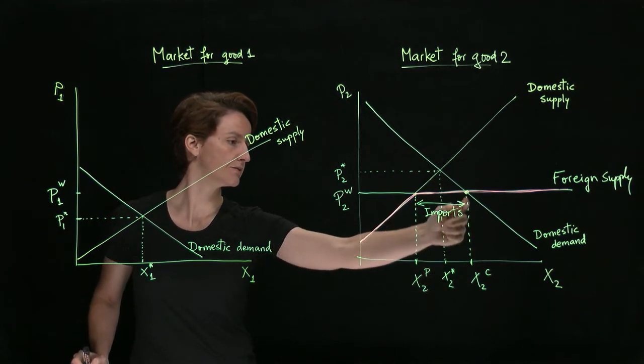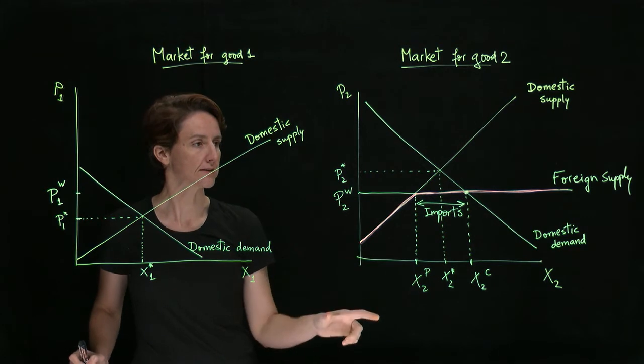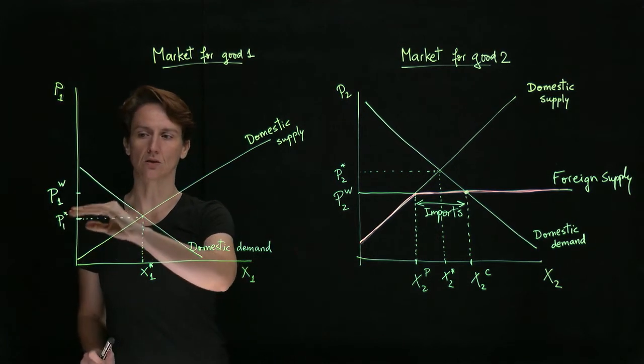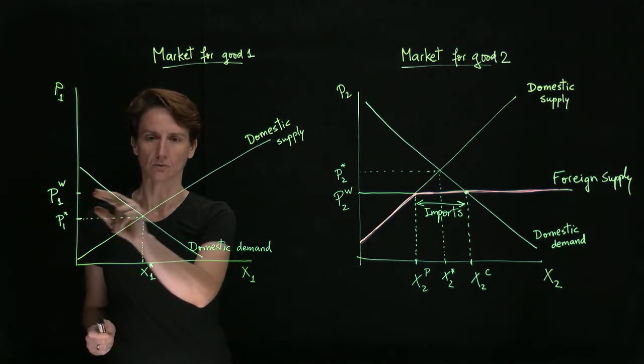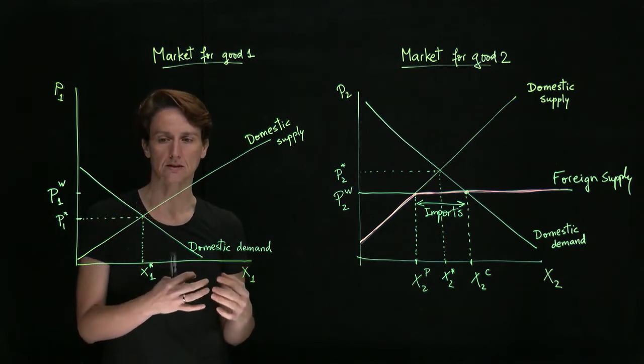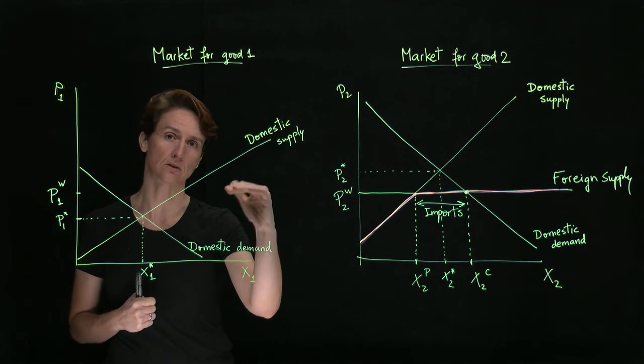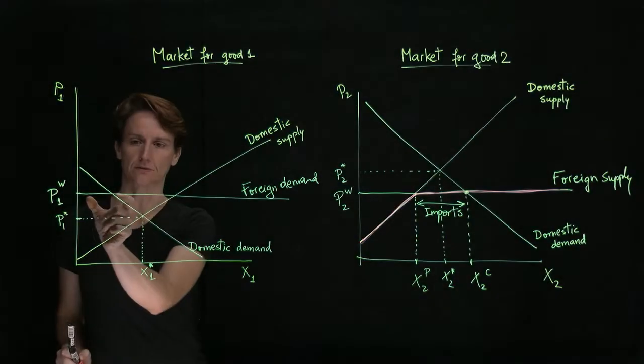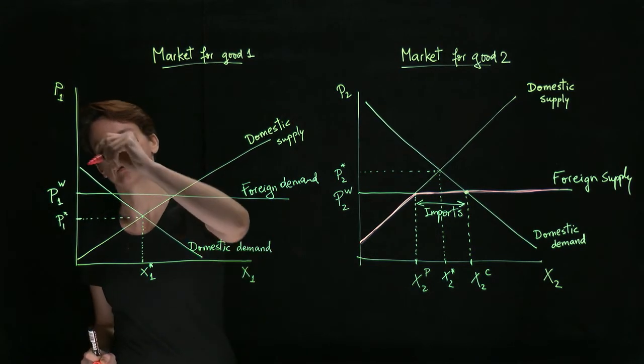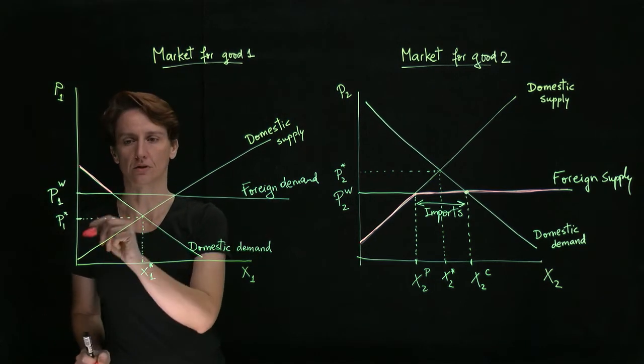Conversely, if we look at a market where the equilibrium price before trade is below the world price, then the world price, rather than the external market overall, will be present from the perspective of this country as foreign demand rather than foreign supply. So for the first segment, the highest price is paid by domestic consumers, but after that, it's paid by foreign consumers.